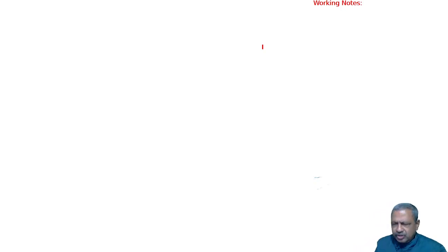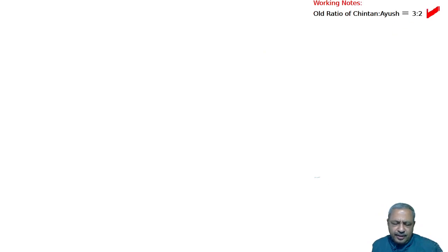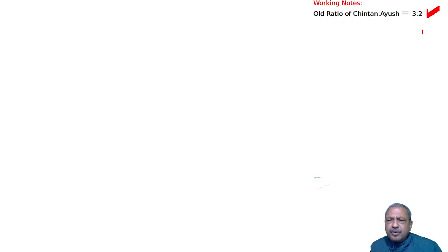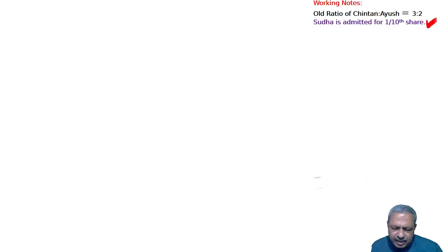Chintan and Ayus are partners in a firm sharing profits and losses in the ratio of 3:2. Their old ratio is 3:2. Shudha was admitted as a new partner for a 1/10 share. So Shudha has taken admission for 1/10 share. Now we will find the new ratio and sacrificing ratio.